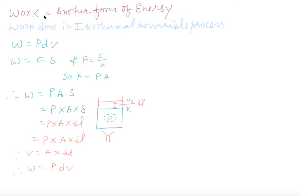Hello students, today we are going to discuss work — another form of energy. Our topic is work done in an isothermal reversible process. Work done is given by W = PdV, which is also called mechanical work.